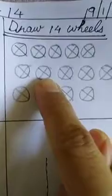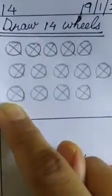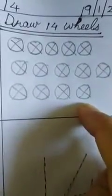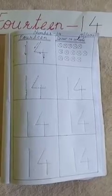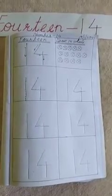1, 2, 3, 4, 5, 6, 7, 8, 9, 10, 11, 12, 13, 14. Yes, so these are 14 wheels. And the number that we did today, we learned to write and also we learned the value of number 14. So children, I want you to complete this work in your numeracy notebook and submit it by tomorrow. Happy learning.